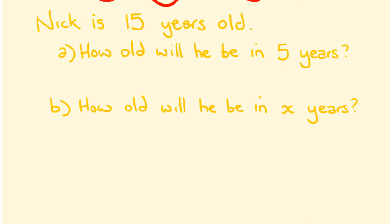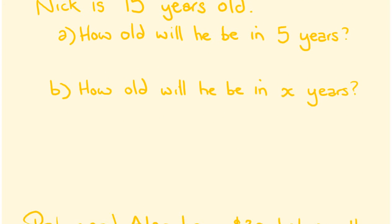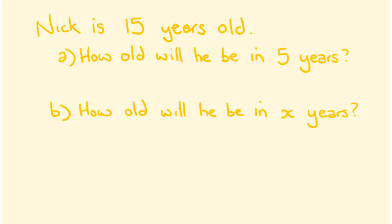Here's another example. Nick is 15 years old — how old will he be in five years, and how old will he be in x years? The x represents any number of years: one, five, ten, ninety. Is there a general rule we can write algebraically? You'll see that algebra works exactly like normal maths — it's just that instead of numbers we're using letters.